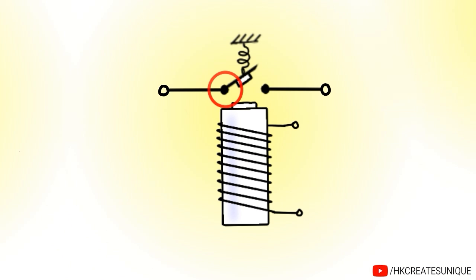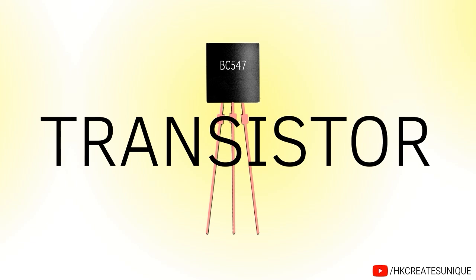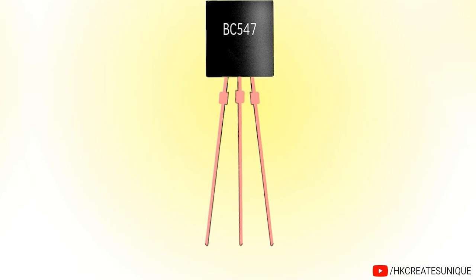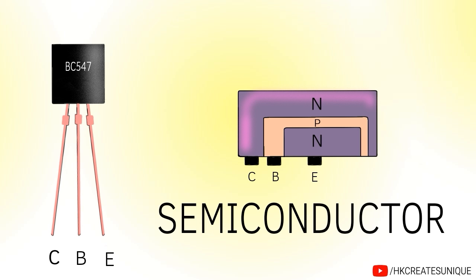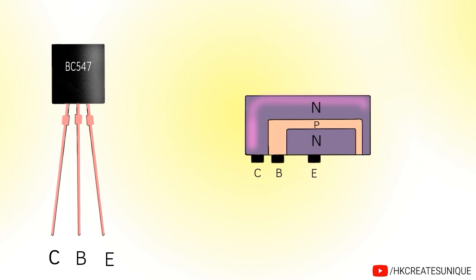Unlike relays which have mechanical parts, a transistor is a solid state device. A bipolar junction transistor has three terminals: collector, base, and emitter. A transistor is made of semi-conducting materials. Rather than focusing on how a transistor works, I will show you how to use it as a switch.